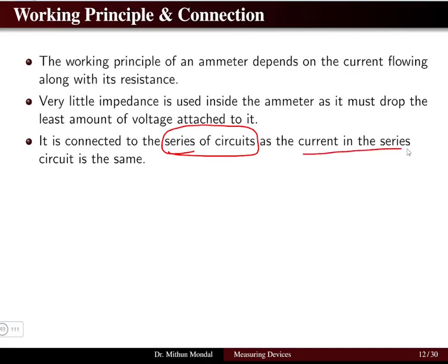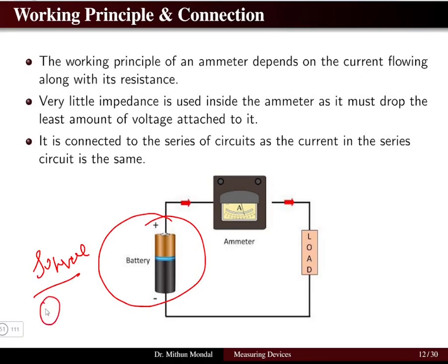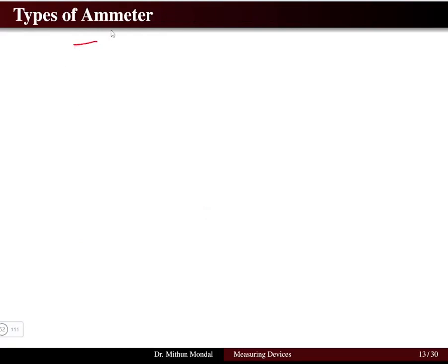The ammeter is always connected in series in the circuit because the current has to be the same throughout a series circuit. Here we can see a general circuit with a battery — the source can be AC or DC. For a DC source we use plus/minus notation; for an AC source we use a sinusoidal generator. The load can be anything — a motor or an RLC circuit — and the current is measured with the ammeter connected in series.